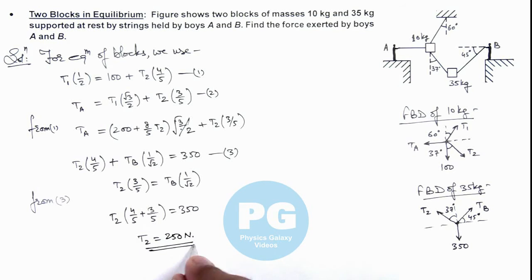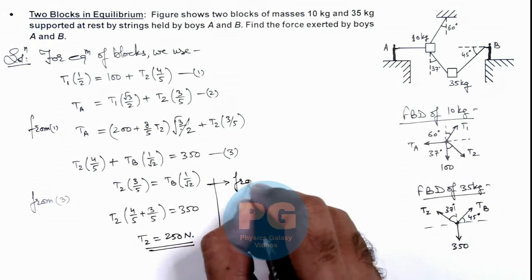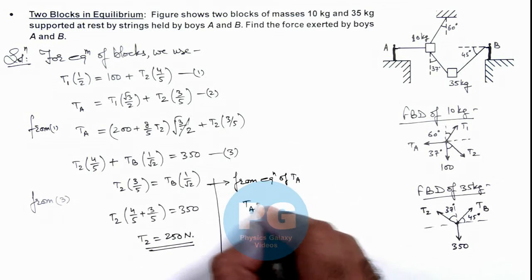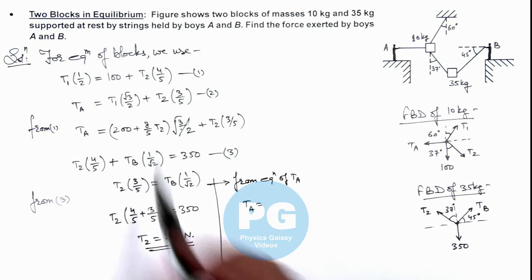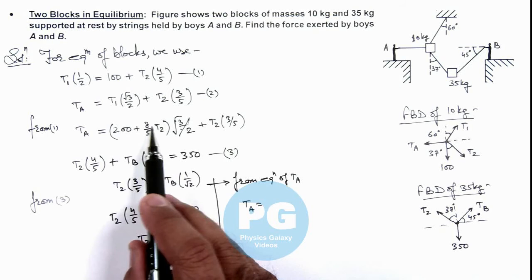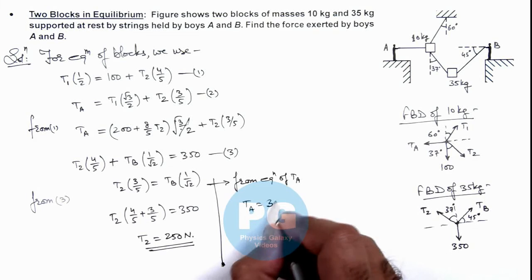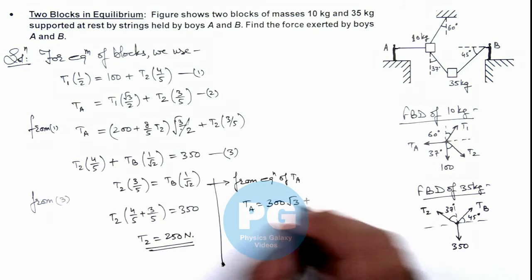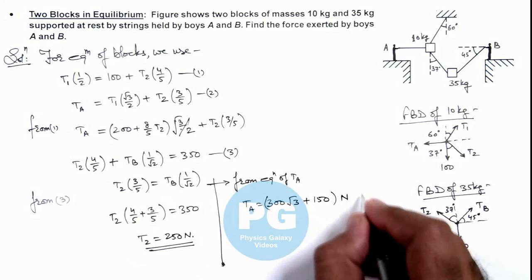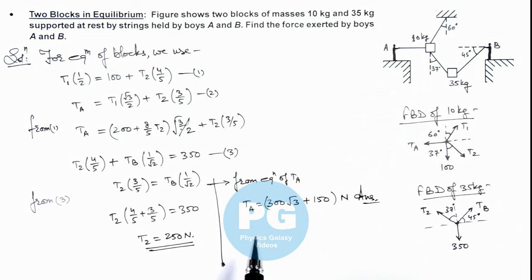Now that we have T2 = 250 newtons, we substitute back into the expression for T_A. We get T_A = 200 + (8/5) × 250 = 200 + 400 = 600 divided by 2... which gives 300√3 plus T2 × (3/5) = 150. So the force exerted by boy A on the 10 kg block is 300√3 + 150 newtons.